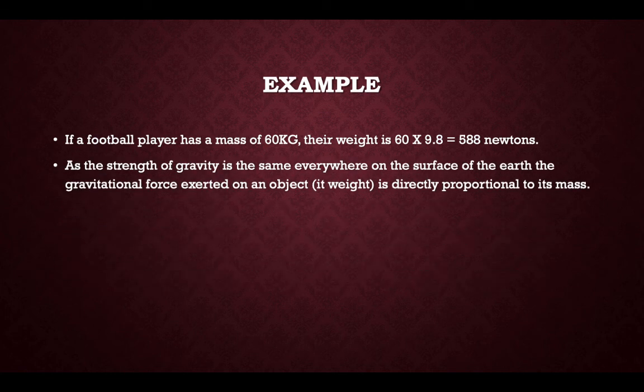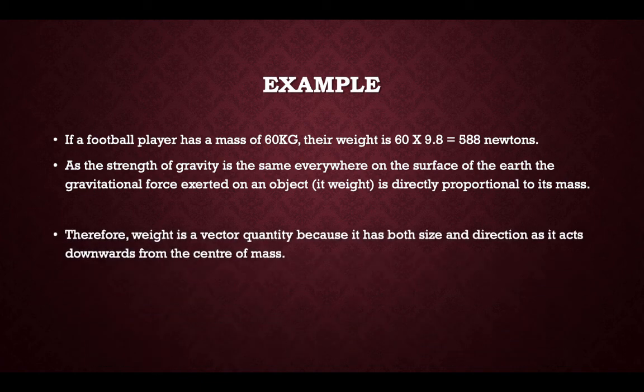As the strength of gravity is the same everywhere on the surface of Earth, the gravitational force exerted on an object is directly proportional to its mass. Therefore, weight is a vector quantity because it has both size and direction, as it acts downwards from the centre of mass.